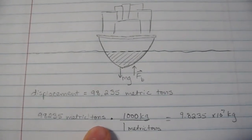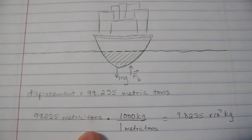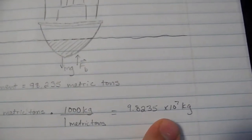Just multiply by 1000. It's a simple unit conversion, and we get 9.8235 times 10 to the 7th kilograms.